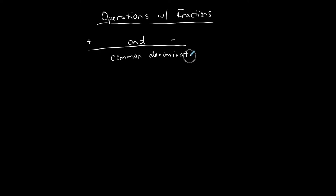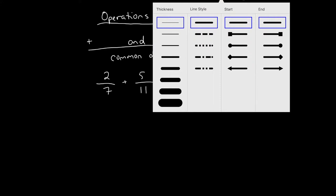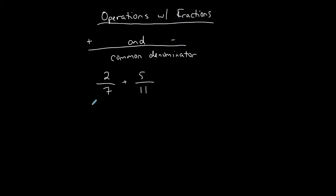So if you start with a common denominator, that's awesome. But if you don't — let's say I have two-sevenths plus five-elevenths. I have two fractions I want to add, but I don't have the same denominator, so I have to create one that is the same. Sometimes it's the product of the two. What number do seven and eleven both go into? If you can't think of a nice number, then the product of the two is that common denominator. So I'm going to multiply this denominator by eleven.